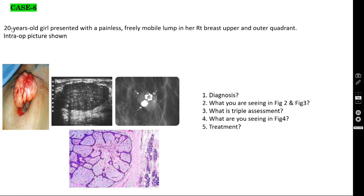Case number 6: a 20-year-old girl with a painless, freely mobile lump in her breast — fibroadenoma, right breast, upper and outer quadrant. An intraoperative picture is shown. What is your diagnosis? It is a 20-year-old girl with a painless, freely mobile lump. Ultrasound and intraoperative pictures are also shown. The diagnosis is fibroadenoma.